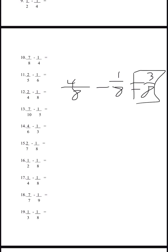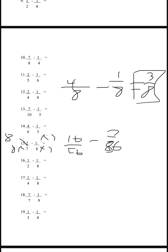Number 15: we need to make the denominator the same, so multiply by 8 on one side and by 7 on the other, top and bottom. We get 16 over 56 minus 7 over 56, so 16 minus 7 is 9, giving us 9 over 56 as the answer for number 15.